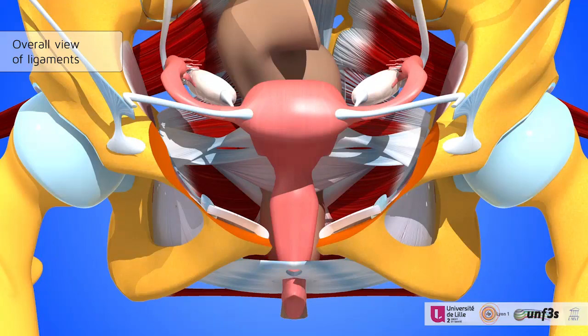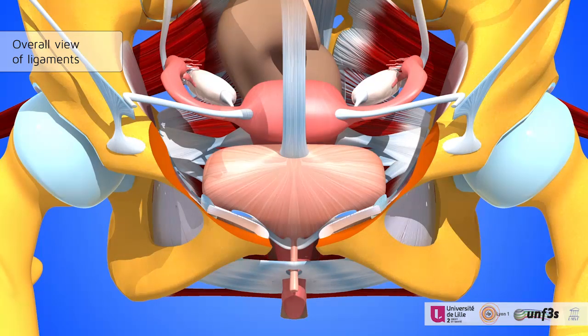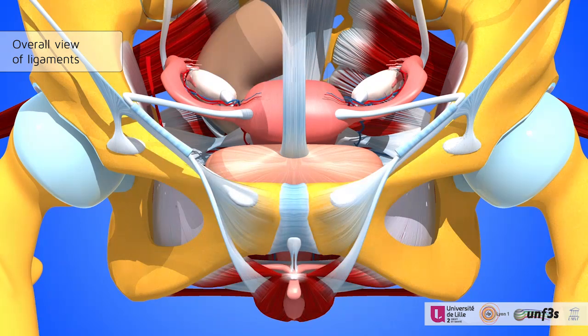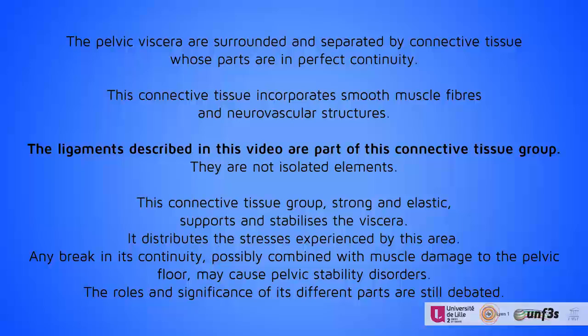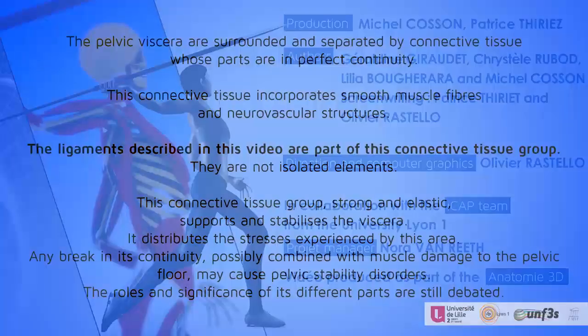We finish with this overview of all the ligaments. All of the ligaments described are part of the connective tissues of the pelvic cavity. They are not isolated elements and have to be considered in a global, comprehensive view.